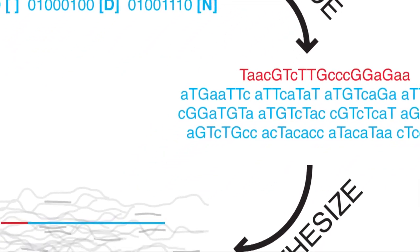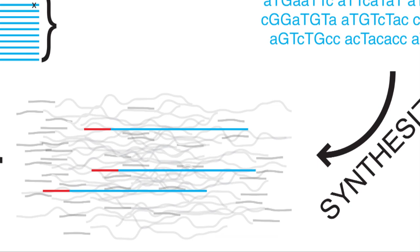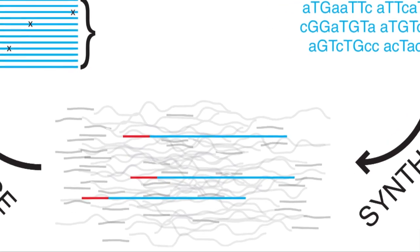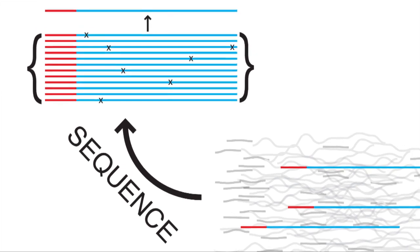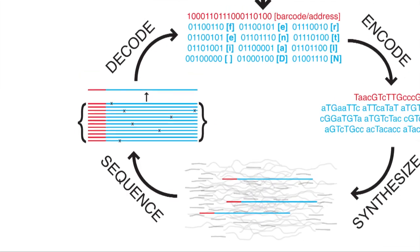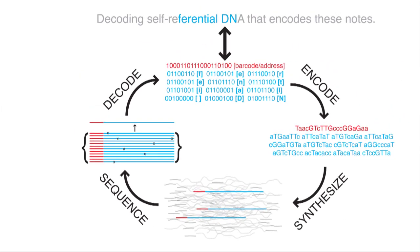We add PCR primers to the end of those and synthesize it on a microfluidic chip. What's shown is the red barcode and the blue data block, in a larger context of other barcodes and data blocks. When we sequence the whole thing, we get many copies of each particular barcode sequenced. We were then able to reconstruct the message by decoding it back to ones and zeros and then back to text. Because we have the address, we know where it goes back, so once we sequence everything we can reconstruct the original digital information that was encoded.